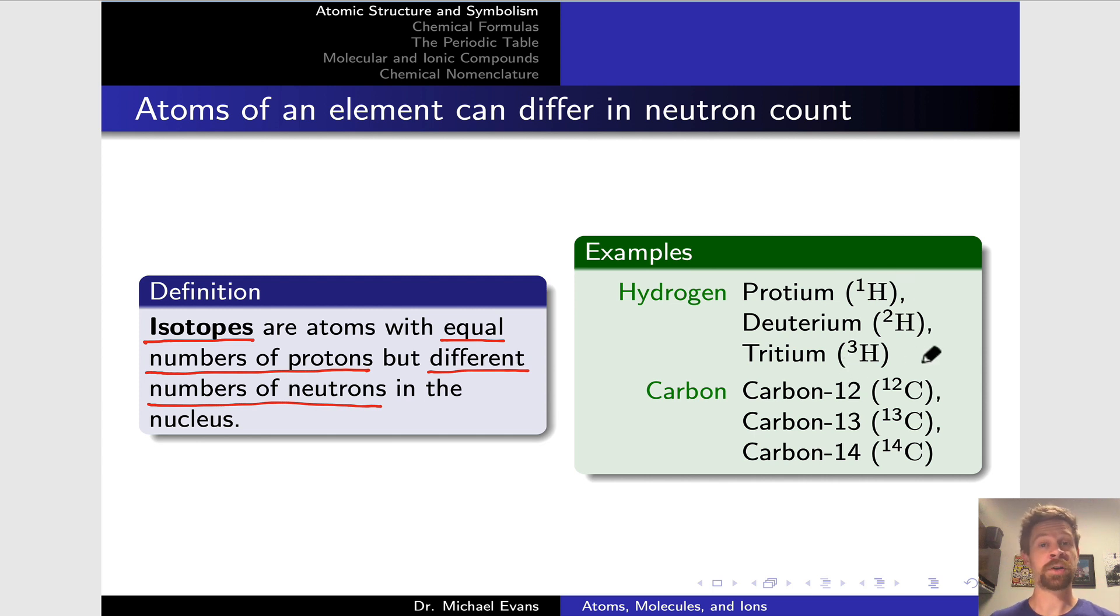All three of these, if we're talking neutral atoms, have one proton and one electron. That defines a neutral hydrogen atom, but they differ in their numbers of neutrons.